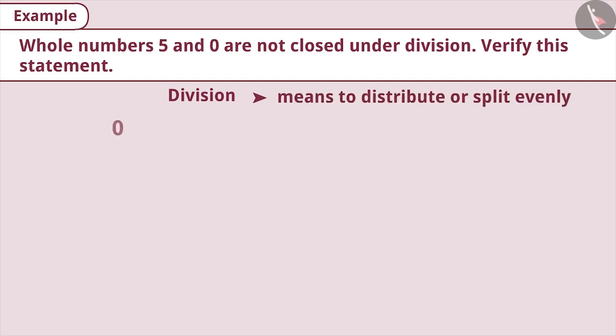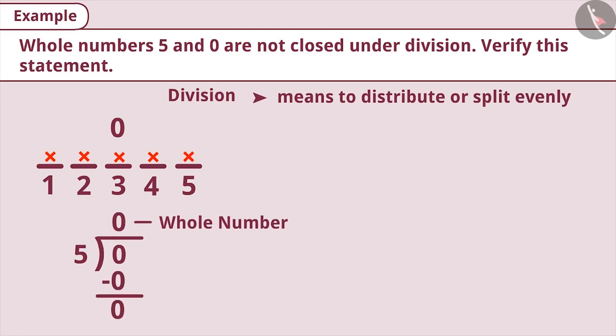If you have 0 chocolates, which you have to distribute equally among your 5 friends, then you will not be able to give any chocolates to your friends. That is, the division of 0 by 5 will result in a whole number 0. Will the result of 5 divided by 0 also be a whole number? Think for a while.